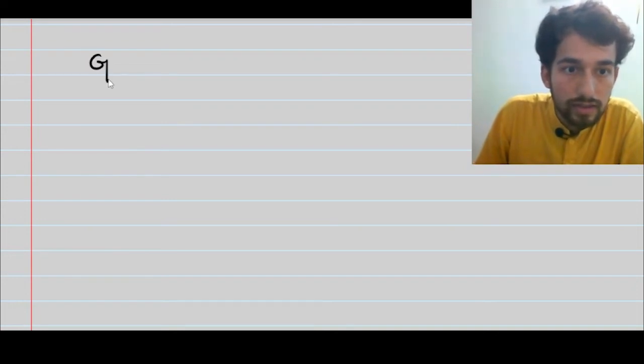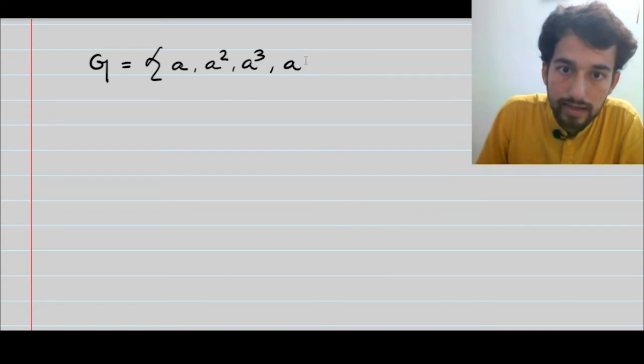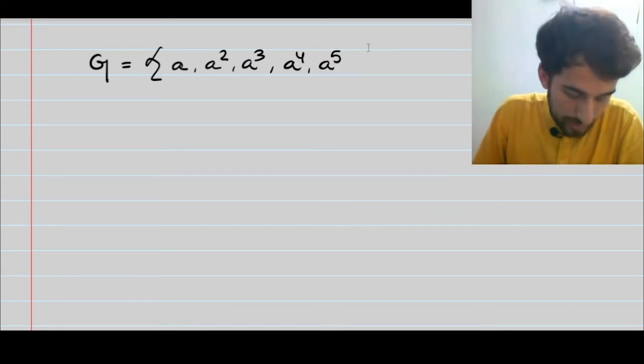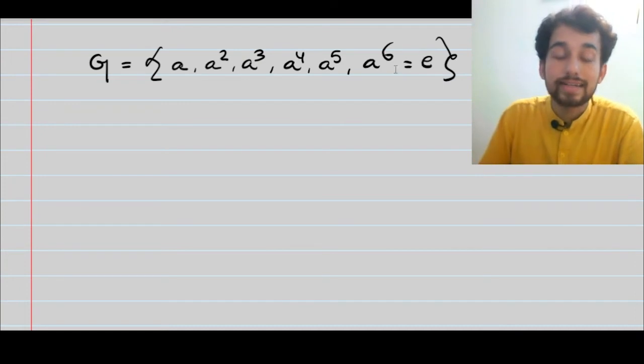We have a group G which consists of the following elements: a, a square, a raised to the power 3, a raised to the power 4, a raised to the power 5, and finally a to the power 6 equals to e, where e is again the identity element.